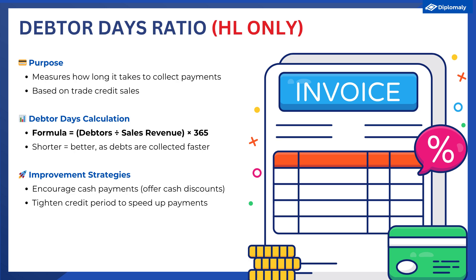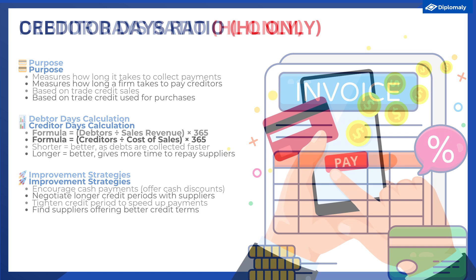To improve the debtor days ratio, firms can encourage customers to pay by cash, such as by offering a cash discount, or by tightening the credit period, which is how long customers have to pay back the business.